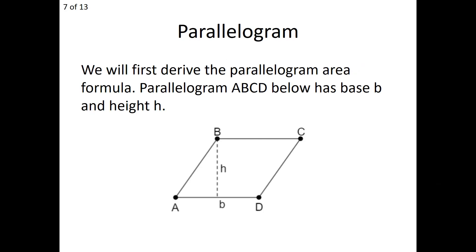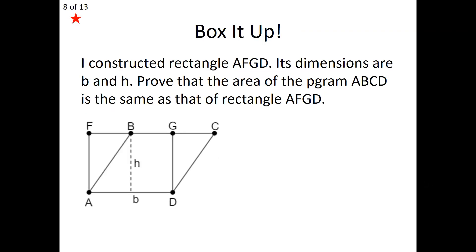So we begin with the derivation of a parallelogram. We start with a simple parallelogram ABCD where I've got the base labeled as B and the height labeled as H. Whenever you see that dashed line, go ahead and assume it is perpendicular to the opposite side. What we're going to do is find the area of a parallelogram in terms of its base and its height. The trick or strategy we're going to take is to box it up.